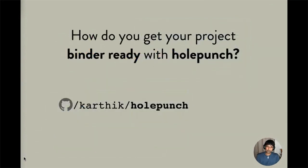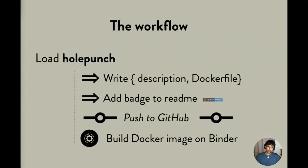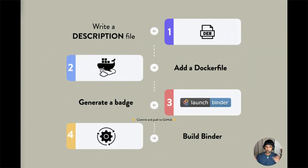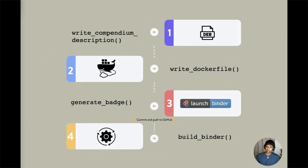So how do you set up Binder for your R project? The simplest way is with the hole punch package. The workflow is very simple: load the hole punch library, then write two files — a description file and a Docker file — add a badge to your README, commit and push your code to GitHub, and then ask Binder to build a Docker image. The workflow maps to four functions in hole punch: write a description, write a Docker file, generate a badge, and build on Binder.